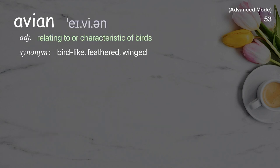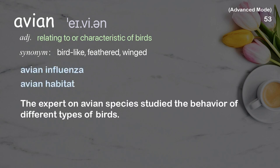Avian: Relating to or characteristic of birds. Examples: avian influenza, avian habitat. The expert on avian species studied the behavior of different types of birds.